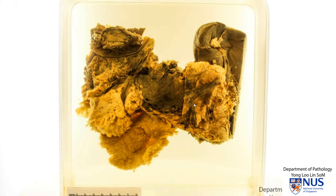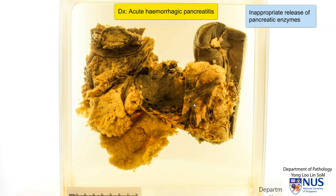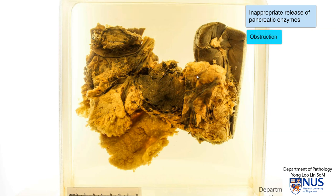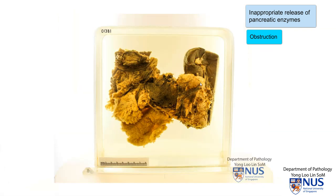This is an example of acute hemorrhagic pancreatitis. Acute hemorrhagic pancreatitis occurs due to inappropriate release of the pancreatic enzymes. The pancreatic enzymes include lipases, elastases, and proteases. The causes for this inappropriate release could be due to obstruction, for example in the instance of stones, tumors, or even parasitic organisms.